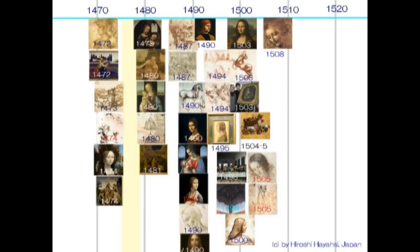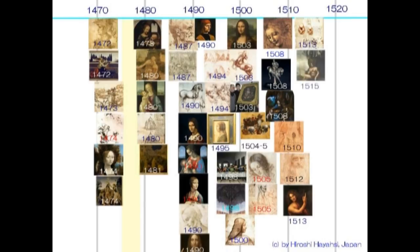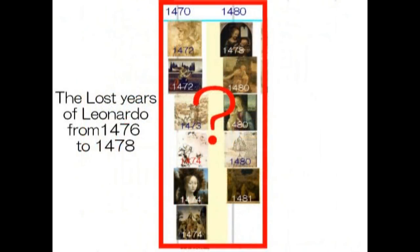最後の晩餐の絵が出てきました。モナリザは1503年ですから、かなり晩年の作品ということになります。こうして並べてみると、レオナルド・ダ・ヴィンチの絵画についてのスタンスはその初期から一貫して変わりなかったということになるのでしょうか。消えた3年間については何があったのか、どこへ行っていたのかという問題については、今の私たちには手がかりもありません。続く動画をどうかご覧になってください。